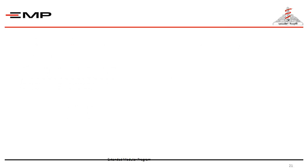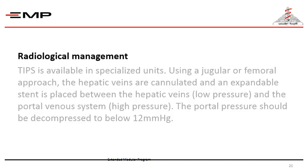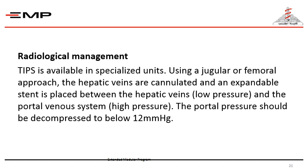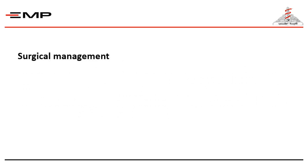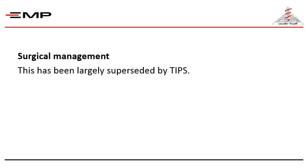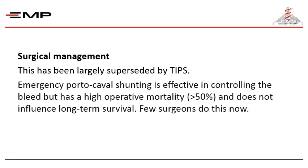Further management: TIPS — transjugular intrahepatic portosystemic shunt — is an effective method for controlling bleeding, but it is not available in all centers and may not be suitable for all patients. It uses a jugular or femoral approach where the hepatic veins are cannulated, and an expandable stent is placed between the hepatic veins — which have low pressure — and the portal venous system — which has high pressure — to decompress the portal pressure until it reaches below 12 mmHg.